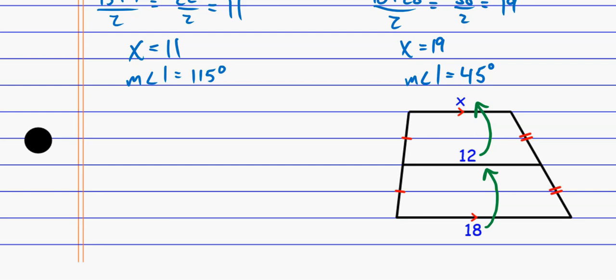So if the difference here is six units to get from the 18 to the 12, the difference here has to be six units, meaning that this guy right here, it's gotta be a six.